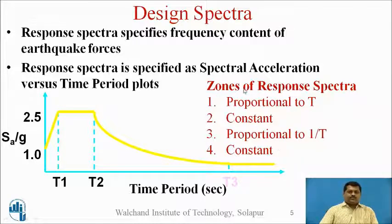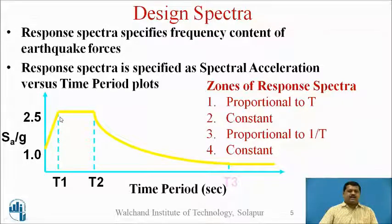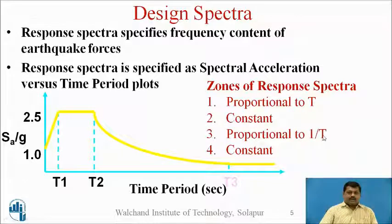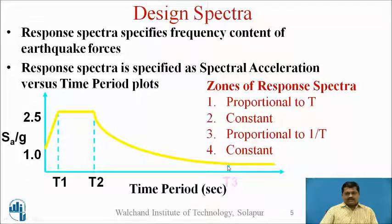Now let us see the zones of this response spectra. The first zone is from 0 to T1, in which SA/g is proportional to T. The second zone, T1 to T2, is constant, having the highest level of SA/g. The third zone after T2 is proportional to 1/T — as T increases after T2, your SA/g reduces. After T3, the fourth zone is constant: as T increases, SA/g remains the same.